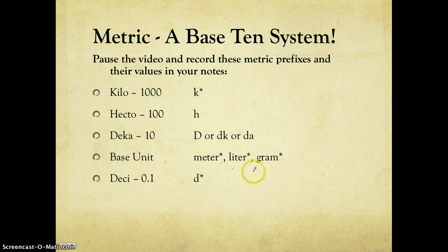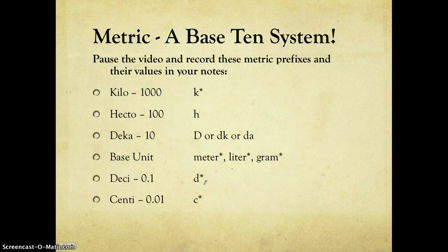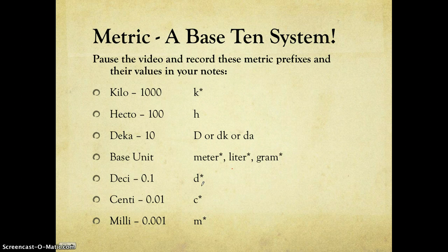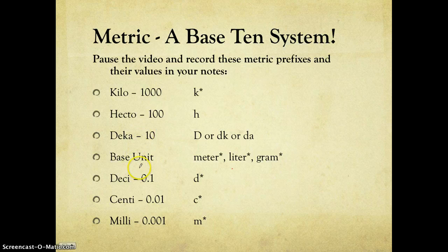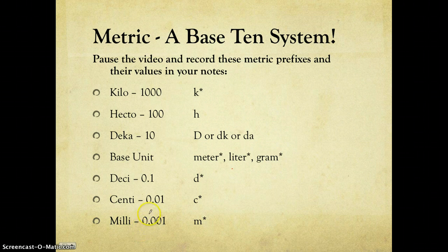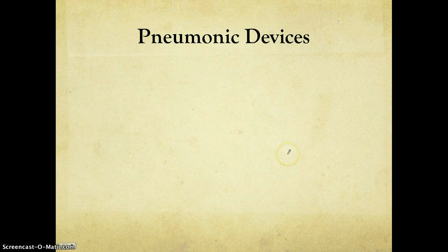And then we have our smaller metric prefixes: deci, one-tenth or point one. I use the decimal and the fraction interchangeably, but we should really use the decimal. Lowercase d. Centi, there are 100 cents in a dollar, and that would be one one-hundredth or point zero one of the base unit. And that's a lowercase c. And then we have milli, point zero zero one or one one-thousandth of the base unit, and we have a lowercase m. Now there are larger prefixes. I'm sure you guys know the prefix mega and giga. And then there are smaller prefixes like nano and pico and micro, but we're not going to worry about those right now. The reason I have asterisks for kilo and for deci, centi, and milli, as well as the base units meter, liter, and gram, is because this is what we're going to see more commonly in chemistry. So if you haven't recorded those yet, please pause and do so.